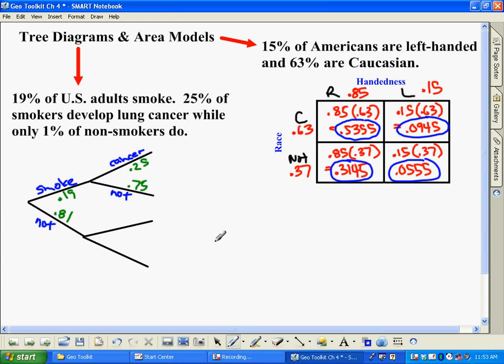You can do the exact same thing here for non-smokers. So we have cancer, we have not getting cancer, and those percentages would be, let's see, 1% of people would get cancer, that's 0.01. People that are non-smokers, that is, 1% chance of getting cancer and a 99% chance of not getting lung cancer if you're a non-smoker.